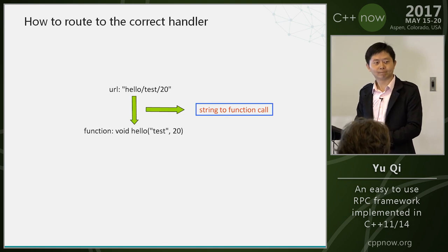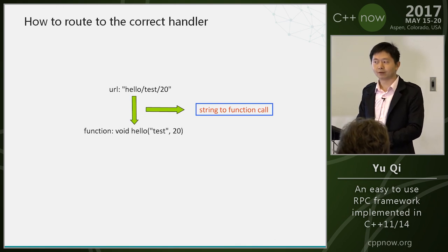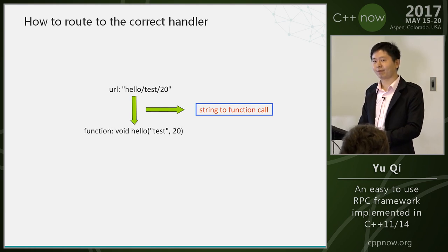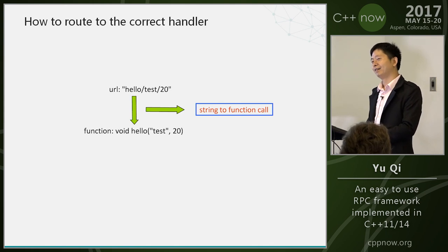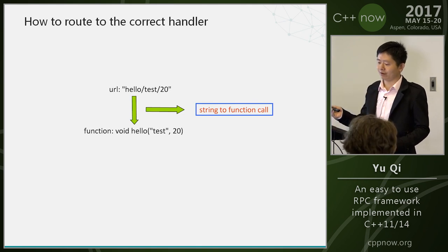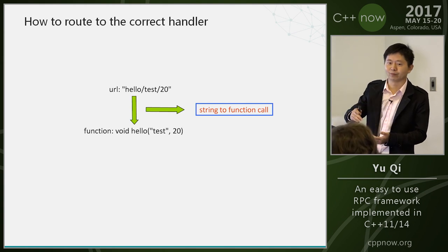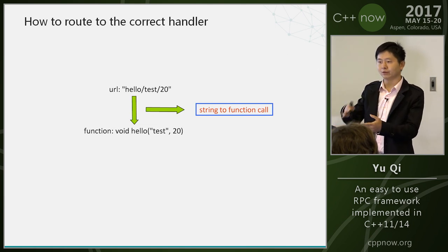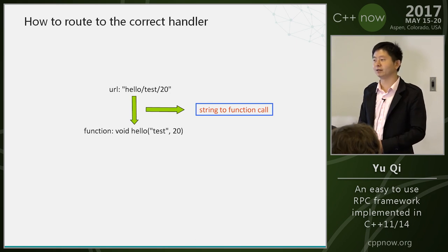You need a table — a map from a string to your type-erased function container. The URL contains the service name as the key, and the rest of the string is the arguments. If you send this string to the server, the server will route to the correct handler. You then need to parse the string into real arguments and put them in a tuple, and finally use std::apply.